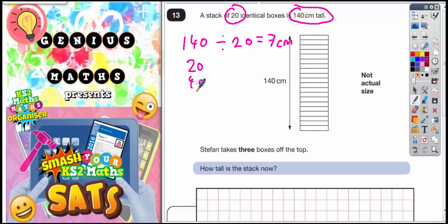So 20, 40, 60, 80, 100, 120, 140. So if you count up in 20, you can see by the time you get to the 7th lot of 20, you've got to 140. So 7 lots of 20 must be 140.